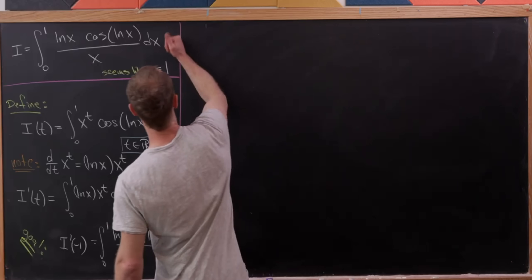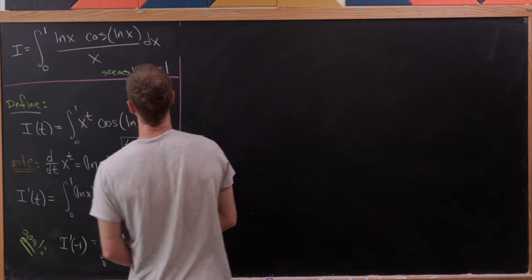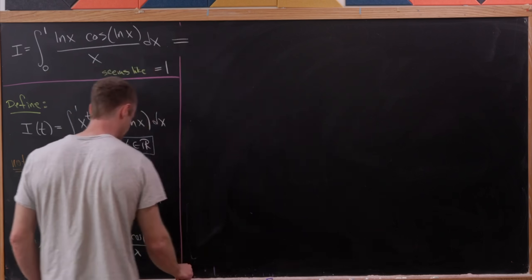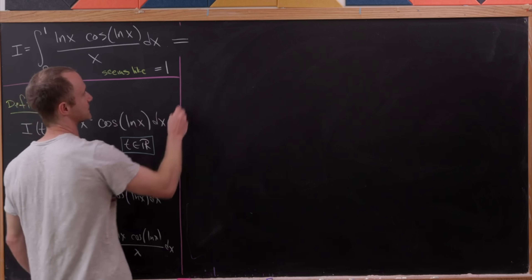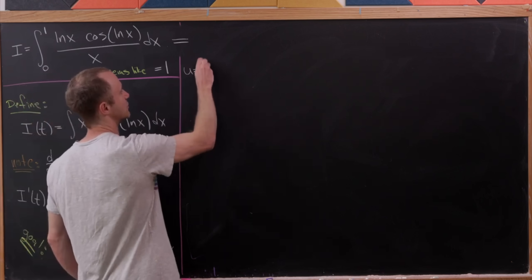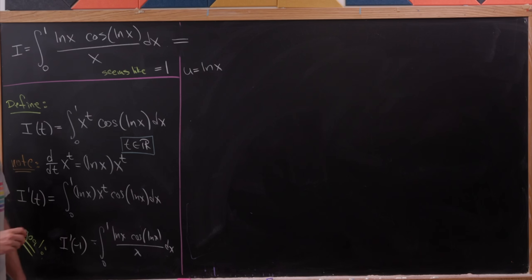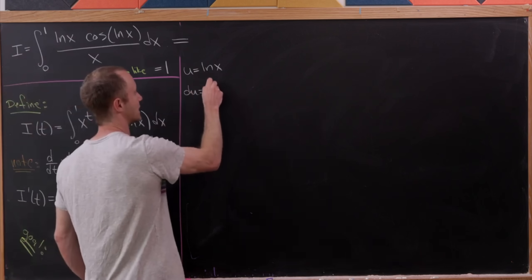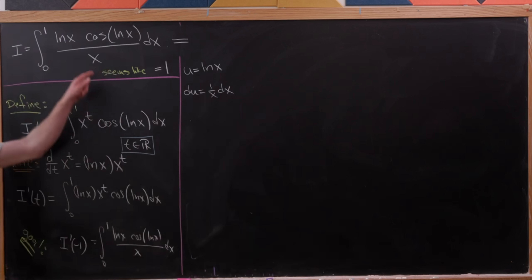Now let's explore this using another method. The method that probably jumps out is a u-substitution. We'll let u equal the natural log of x, since natural log of x appears throughout. Then du equals 1 over x dx, which has the added benefit of absorbing the x in the denominator.